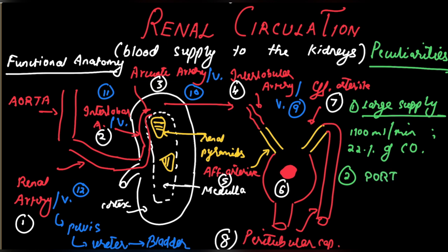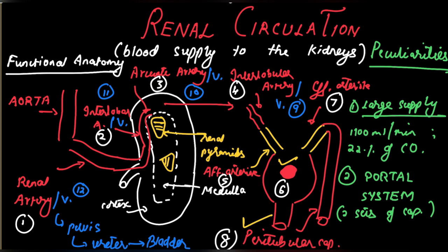Second, it is a portal system, meaning one set of capillaries leads to another set of capillaries. The glomerular capillaries, instead of leading into the venous side, lead to another set of capillaries — the peritubular capillaries. The other organs in which such a system exists are the liver and the pituitary gland.